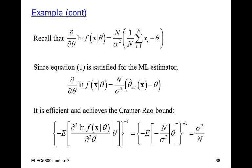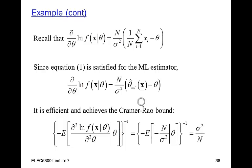We can calculate the Cramér-Rao bound by differentiating the log likelihood twice with respect to theta. Differentiating again with respect to theta gives minus n divided by sigma squared. This is a constant — it doesn't depend on any of the x's. The expected value of this constant is just minus n over sigma squared, so one over that gives sigma squared divided by n, which is exactly the variance of the estimate we derived before. The Cramér-Rao bound is exactly equal to that variance.